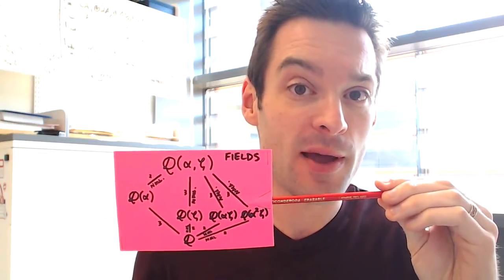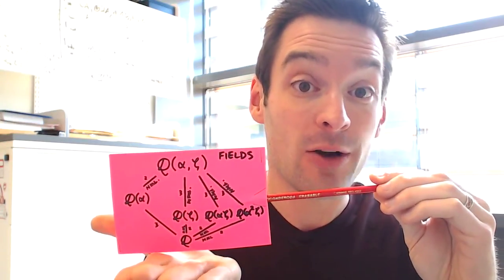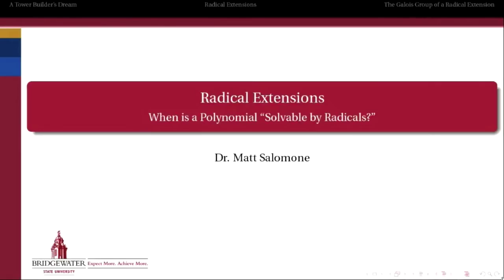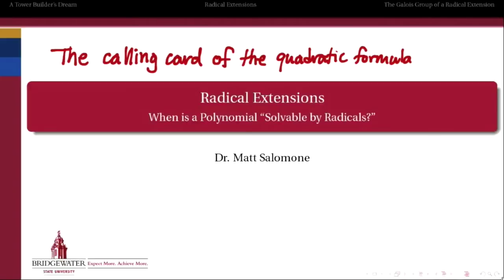So what we want to do in this next couple of videos is figure out what it is about polynomials of degree 2, 3, and 4 that make it possible for them to have a simple formula to discover their roots. We're going to do that by answering the question: if we can find the roots of a polynomial in a simple fashion — in other words, if the splitting field is of a certain form — how will we recognize that by the structure of its automorphism group? If you haven't watched the video on the Galois correspondence yet, click right here and it'll take you there. If you have, then let's get going.